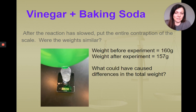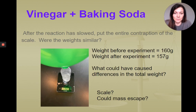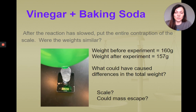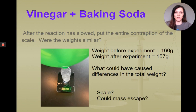There are a few things to take into consideration. Our scale rounds to the nearest whole gram, so this could account for some of the difference. Also, it's possible that some of the gas created during the reaction escaped outside of the seal between our balloon and our bottle. Because of that, we may have lost some gas, and that would impact our measurements for the law of conservation of mass in this case.